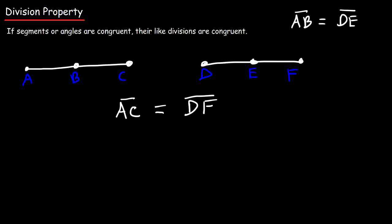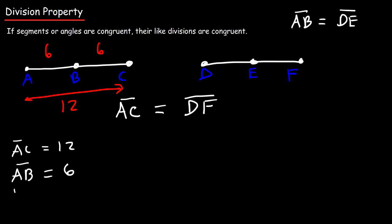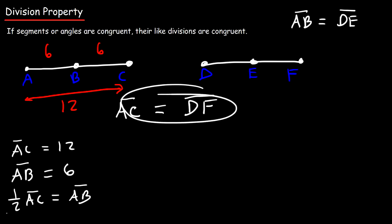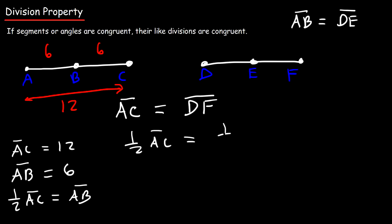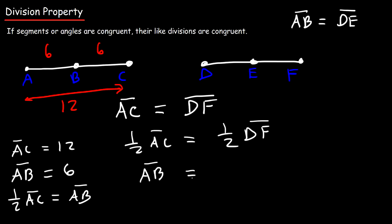Let's assign numbers. Say AC is 12 units long. If B is the midpoint of AC, it bisects it into two congruent segments, so AB is 6 and BC is 6. If AC is 12 and AB is 6, we can say half of AC equals AB. So let's divide both sides by 2: one half of AC equals one half of DF. Half of AC is AB, and likewise half of DF is equal to DE.